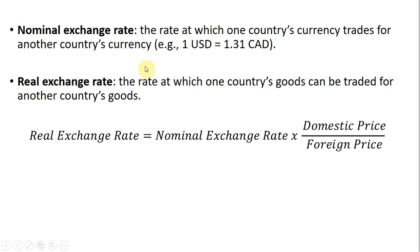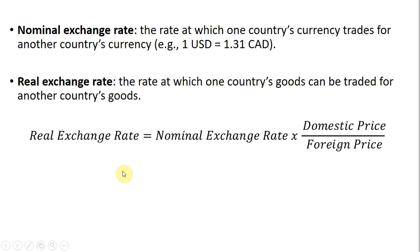The nominal exchange rate is the rate at which one country's currency trades for another country's currency. So currently, roughly one U.S. dollar equals 1.31 Canadian dollars — one U.S. dollar will get you 1.31 Canadian dollars. The real exchange rate is the rate at which one country's goods can be traded for another country's goods, and the formula for the real exchange rate is given by the following.